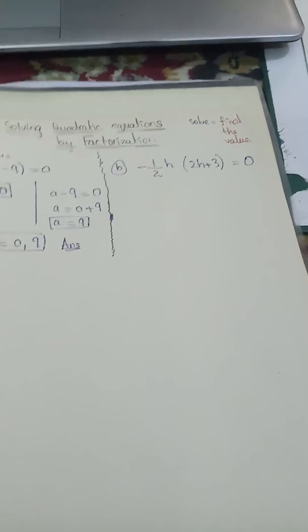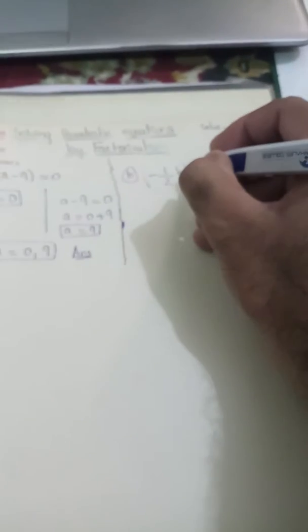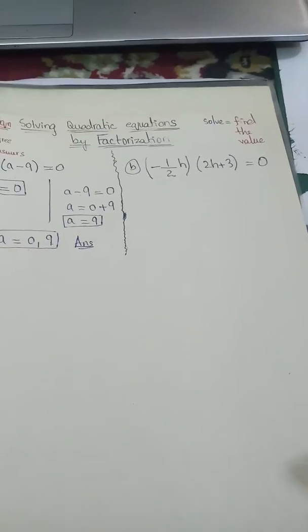We will use the same concept as in the previous question. I will use a bracket sign in order to distinguish between these two numbers. We have two numbers here and these two numbers are being multiplied.